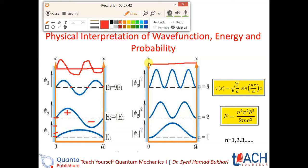For psi 1 probability, we have one half cycle; for psi 2, two half cycles; for psi 3, three half cycles; and for psi 4, four half cycles. The probability, which is psi mod squared, is always in the positive axis. Now look at the pattern — the pattern is defined as the symmetry in this infinite potential well.